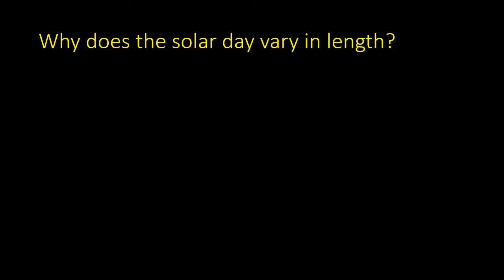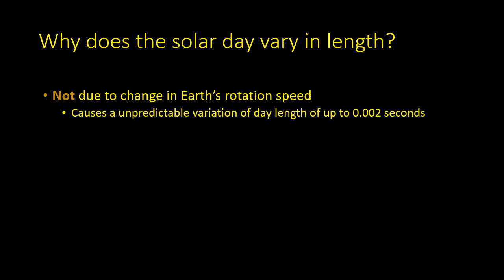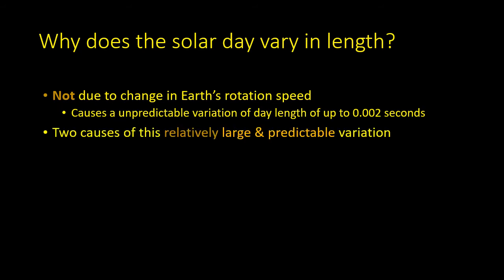The variation in the length of the solar day isn't due to the change in the Earth's rotation speed. Although it does vary a little, the effects are both small and unpredictable, whereas the variation in the length of the solar day is large and predictable. There are actually two different causes of this variation: firstly, the Earth moves in an elliptical orbit around the Sun, and secondly, the Earth is tilted on its axis.